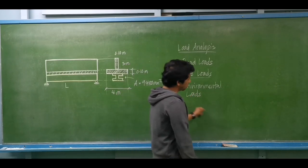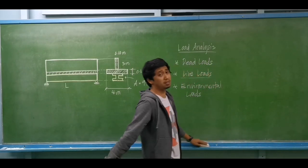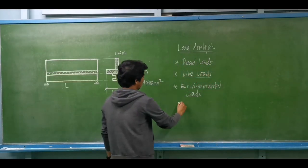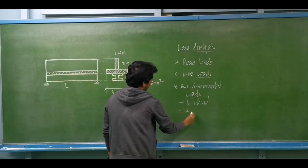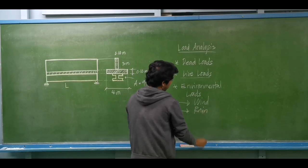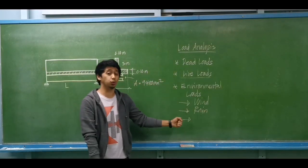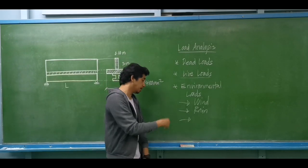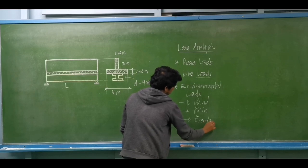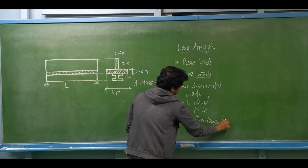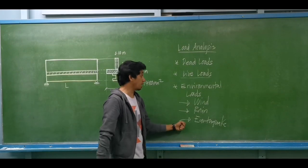Environmental loads are loadings from our environment. One basic example is wind load. Then we have rain. And one of the most important loads — especially if you are designing a high-rise building — is earthquake. Earthquake is obviously unpredictable.